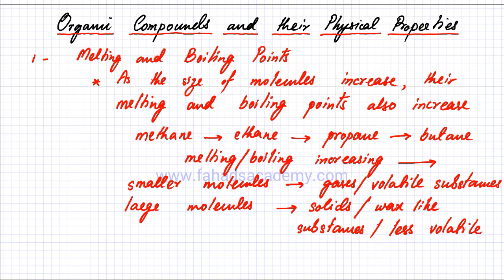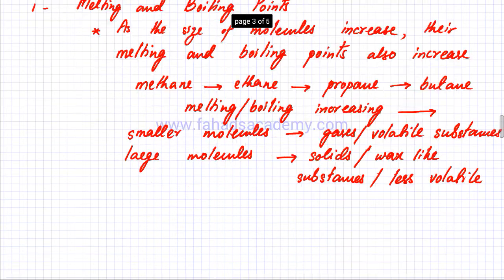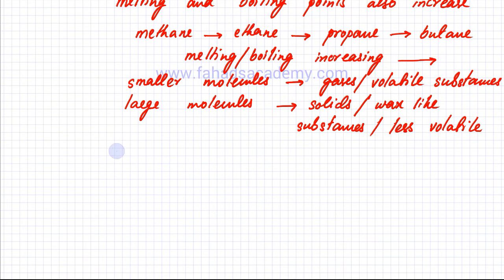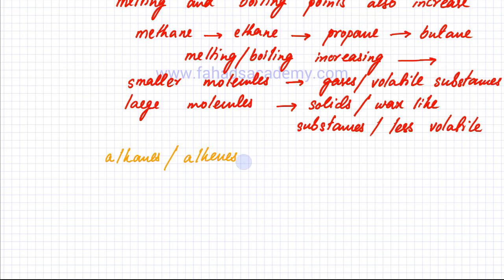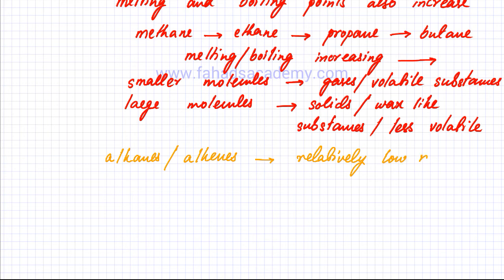That's a general rule that applies to all homologous series. If you want to find out which families of organic compounds have relatively low melting and boiling points and which have relatively high ones: alkanes and alkenes tend to have relatively low melting and boiling points.